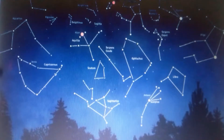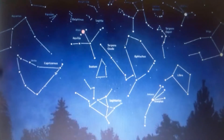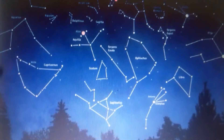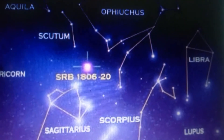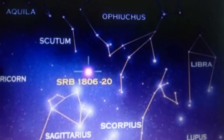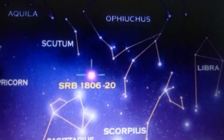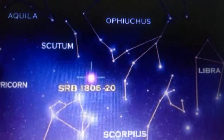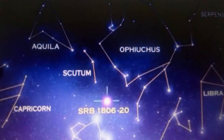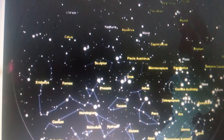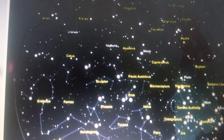A constellation is a group of stars that form a definite shape or pattern when viewed from the Earth. Constellations are usually named after mythological characters, people, animals, and things. There are about 88 known constellations.